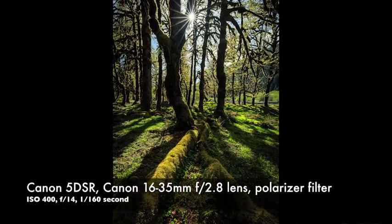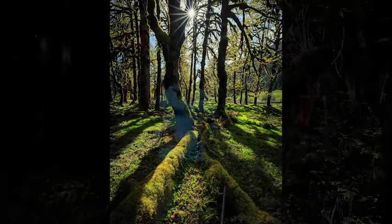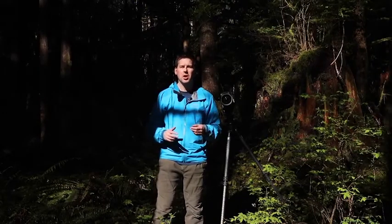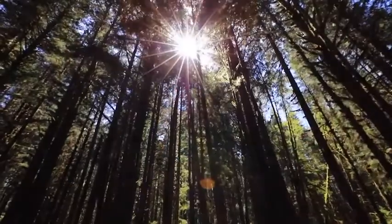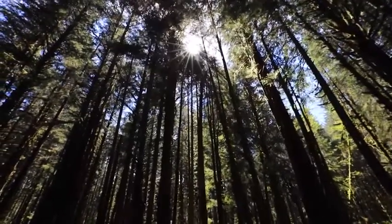You have to be careful when you're aiming the lens into the light because you can get lens flare, so what I always do is make sure to partially block the sun. I'll select positions so that the sun is just peeking out from the corner of a tree trunk or a branch — that way it softens the light a little bit, you still get that burst effect, but you don't get any flare.